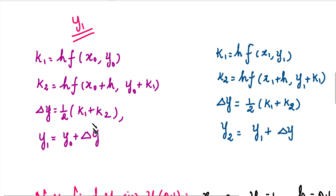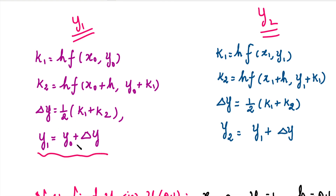This formula gives y₁ and y₂. In this formula, y₁ is computed from y₀ and delta y. The delta y formula is expressed in terms of k₁ and k₂. So we first compute k₁, k₂, then delta y, and finally y₁.